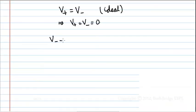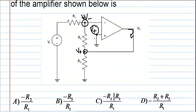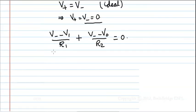we have V minus minus V1 by R1 plus V minus minus V naught by R2 equal to 0, since these are the currents that are flowing through these branches. Now we know that V minus is 0